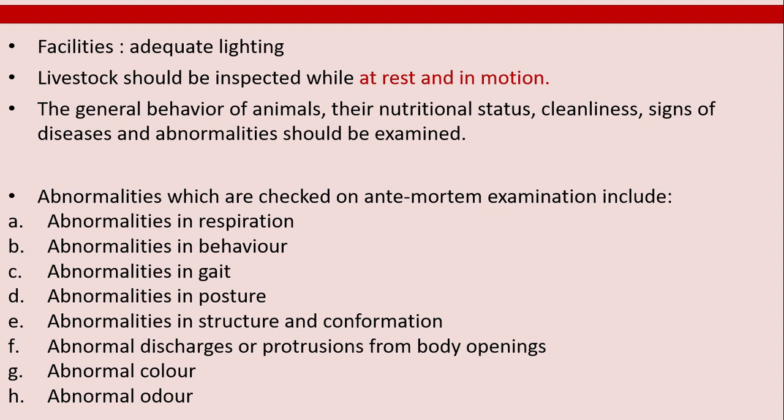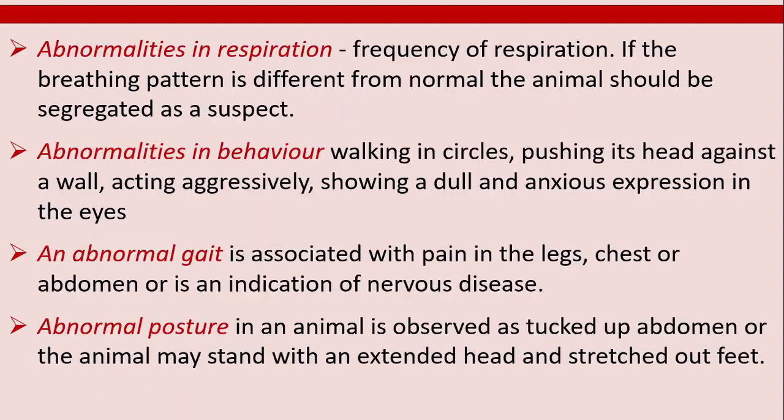Additional abnormalities include abnormal discharges or protrusions from body openings, abnormal color, and abnormal odor. Regarding abnormalities in respiration — if the breathing pattern is different from normal, the animal should be segregated as a suspect. Regarding abnormalities in behavior, examples include walking in circles.